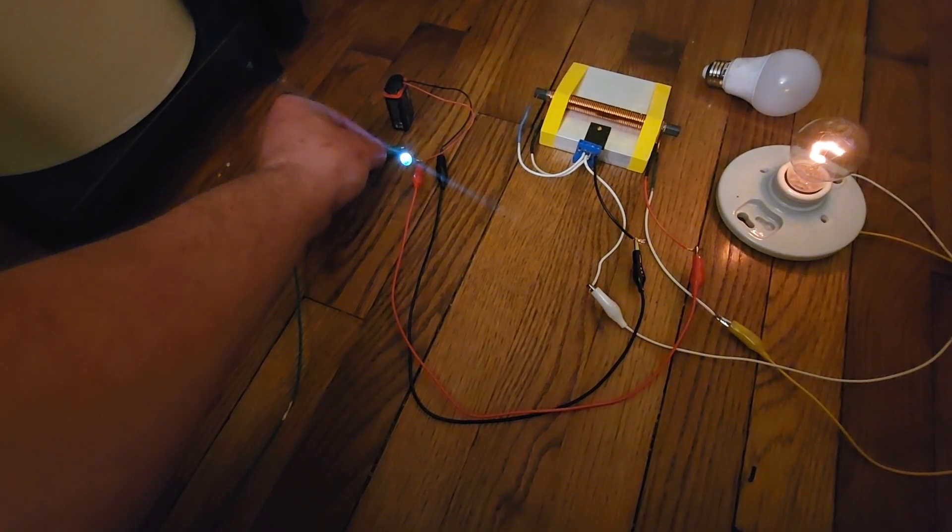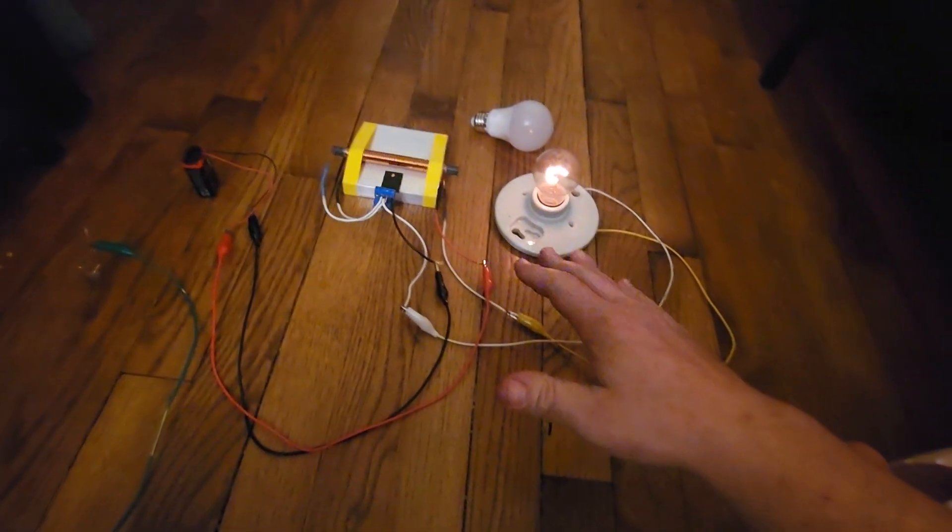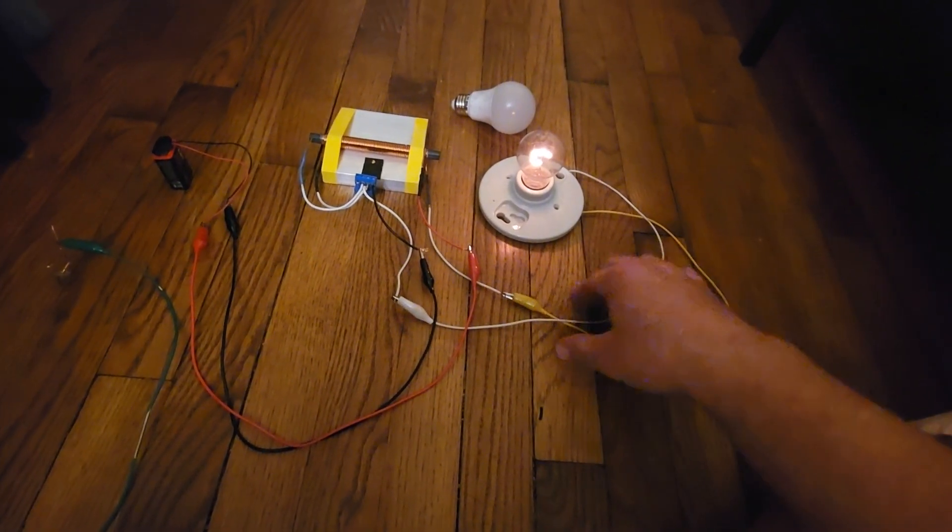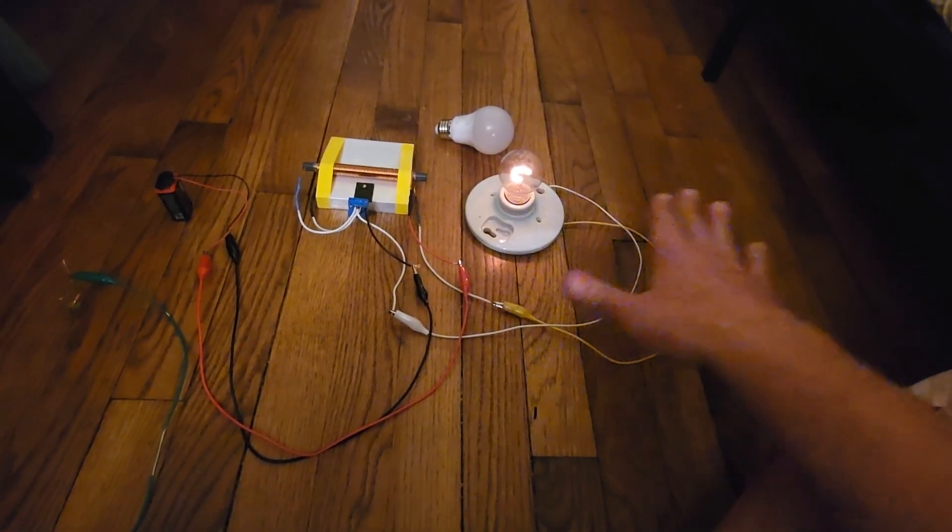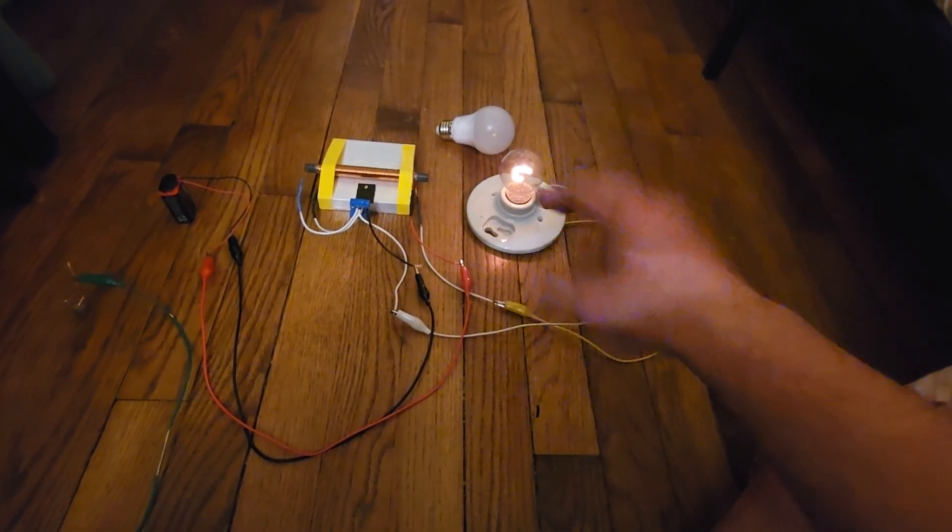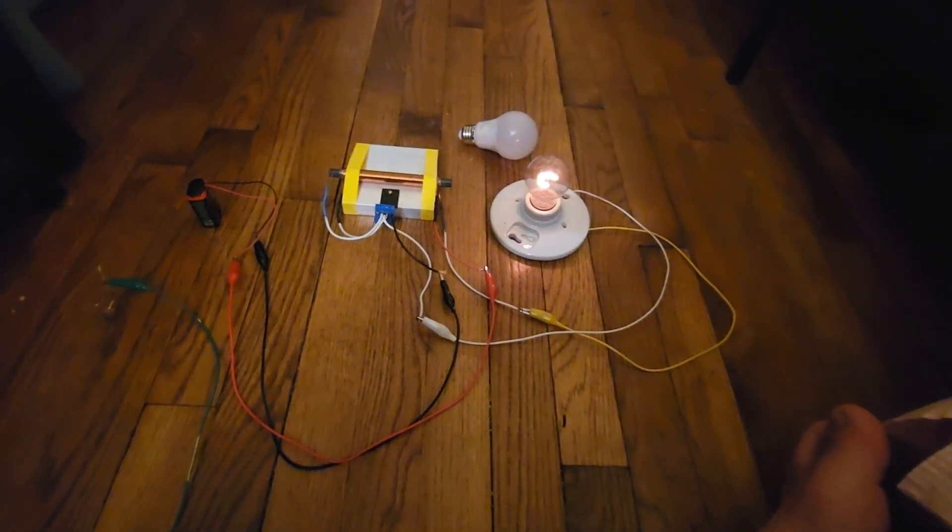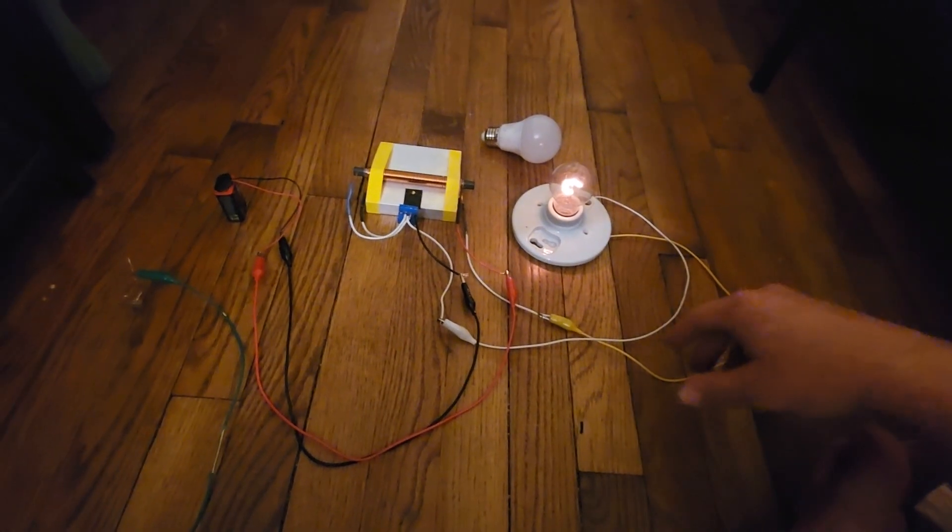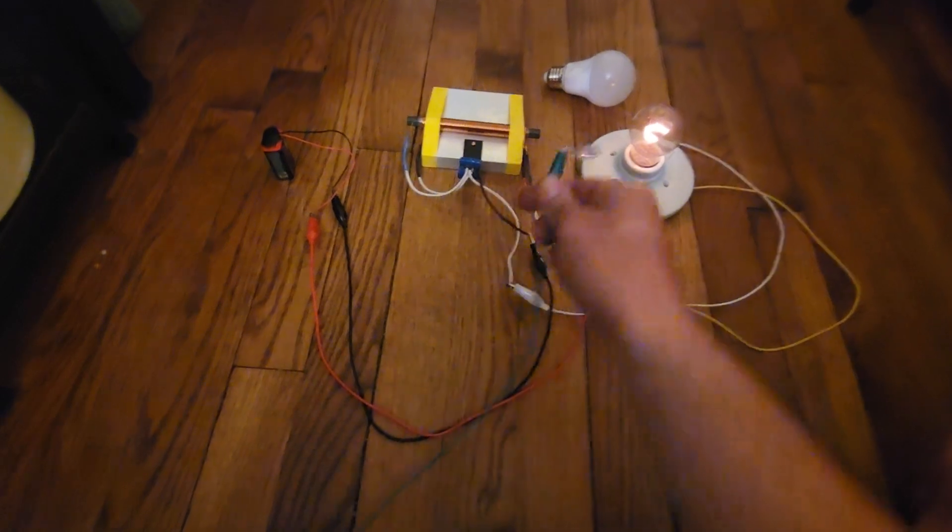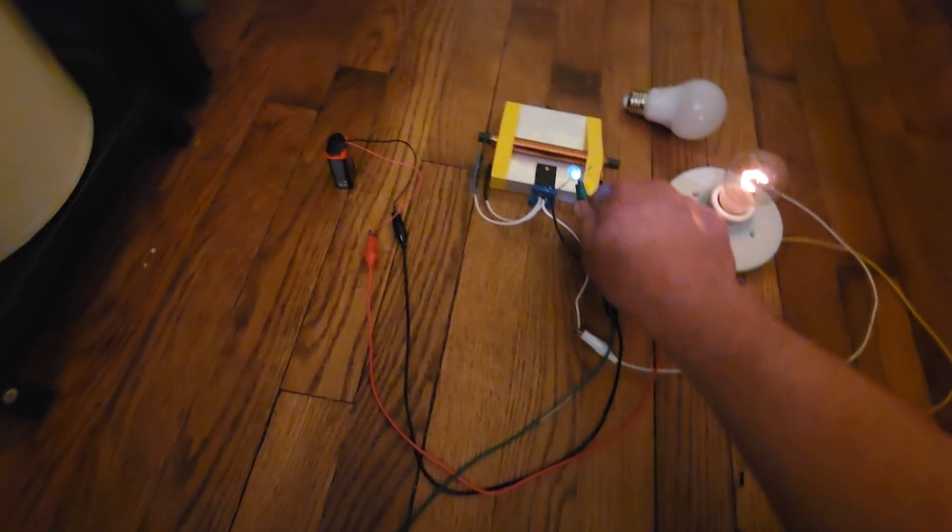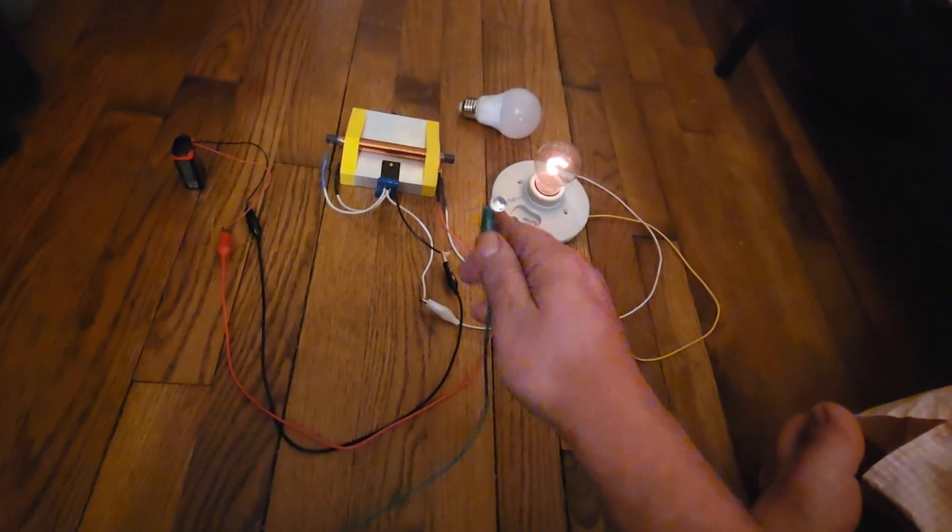There's your free energy right there. The correct way to use this power is you would send this output that's going to the bulb through a very efficient rectifier, charge up a capacitor bank with it, and you pulse discharge it. You step it down to 12 volts and pulse discharge it to charge a big battery, then run an inverter. You can do whatever you want and bring in the ground connection to have even more free power. A little nine volt battery should not be doing that.